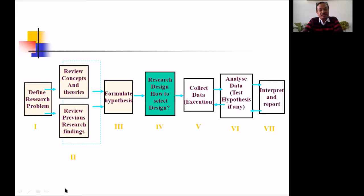Review of previous research findings — these are the two stages. First, think of a research topic, think of a research question. Once you have finalized your research question, you do a review of literature. It is all right to do a review of literature even before you finalize your research question — that would be wonderful. And then you formulate a hypothesis. Formulating hypothesis after reviewing the literature is more useful because by this time you are acquainted with whatever work has been done on that topic.